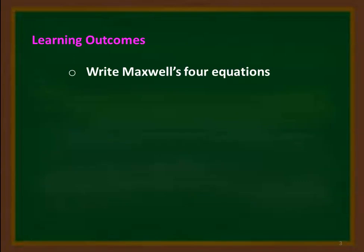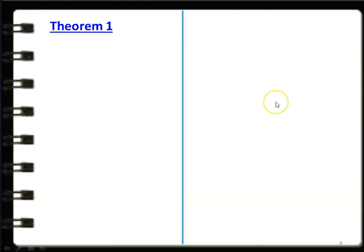The learning outcome for today's lecture is: at the end of the lecture, students will be able to write Maxwell's Relations or Maxwell's equations. Before we take up the derivation of Maxwell's equation, we take Theorem number 1.